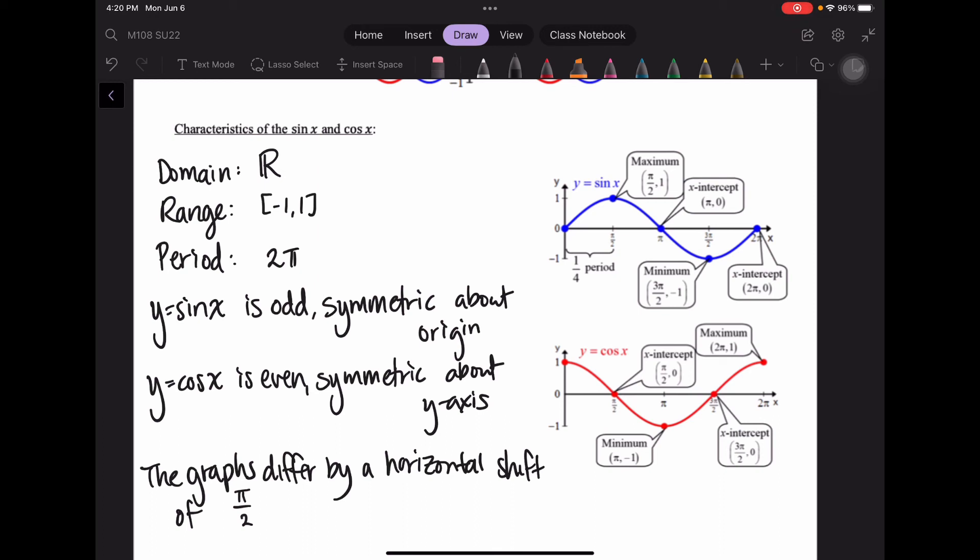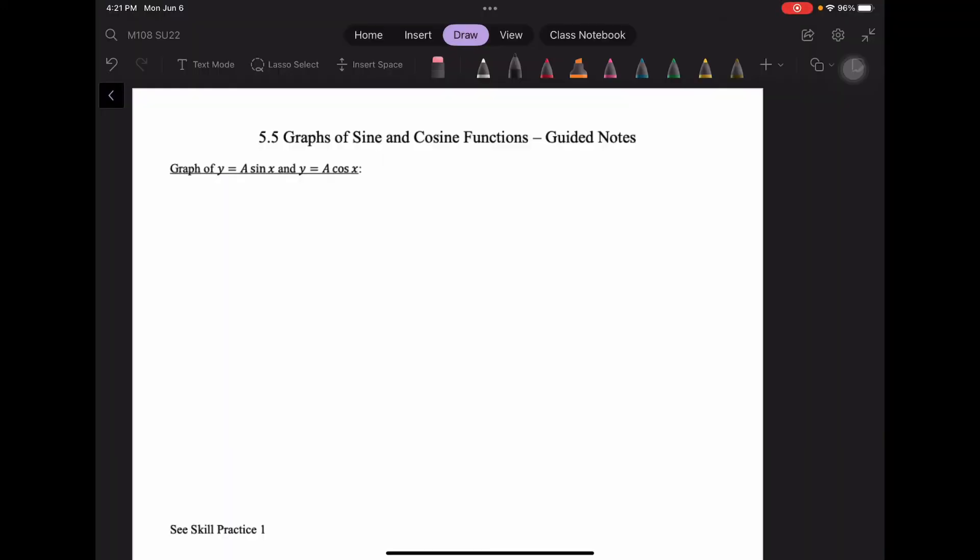Let's investigate what happens to our parent functions when we do some transformations. We're going to start off with transforming by multiplying the coefficient. When you multiply the graph of sine x and cosine x by a, what you're doing is you're multiplying the function value by that a. So essentially we're taking y equals a times whatever that function value is. We have a vertical stretch if the absolute value of a is greater than 1. We have a vertical shrink if the absolute value of a is between 0 and 1. Notice it's the absolute value. We're not talking about the sign because if we have a negative value for a, that's a reflection across the x-axis.